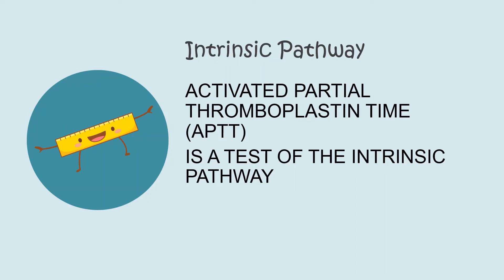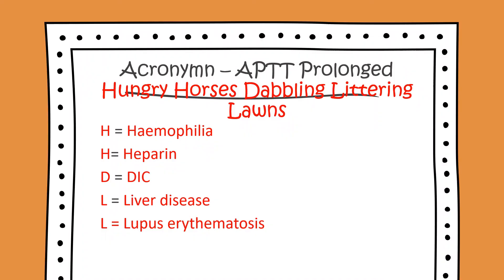The intrinsic pathway is measured by the activated partial thromboplastin time (aPTT). Using the acronym 'Hungry Horses Dabbling Littering Lawns': H equals haemophilia; H equals heparin; D equals DIC; L equals liver disease; L equals lupus erythematosus — all these conditions cause the aPTT to become prolonged.